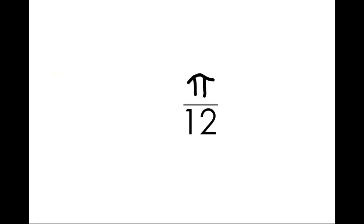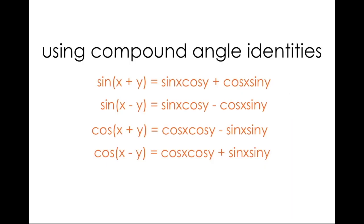So, why did I say pi over 12 is specialer than you might think? As it turns out, we can write pi over 12 as a sum or difference of two special angles. Remember, compound angle identities allow us to look at the sine or cos of a sum or difference of two angles.